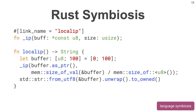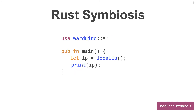Then, we can write a simple program where we call the local IP function and get a string back as expected, which we can then print to the serial port with another Arduino primitive. After adding this glue code, we have solved the last piece of the puzzle. With both interrupts and language symbiosis, we can write real IoT applications on embedded devices with Arduino.